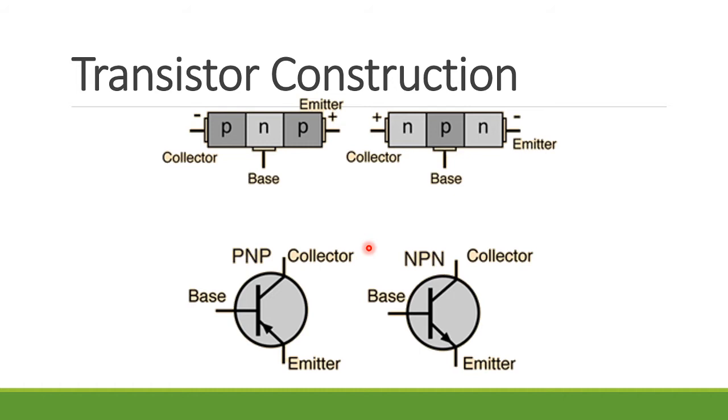Here is the transistor construction - PNP or NPN. It has three terminals: the collector, the base, and the emitter. The base is always in the middle. Whatever is the sandwiched material, that is our base. The symbol for transistor is like this, the schematic symbol. They're different - PNP and NPN - depending on the material. This is PNP, this is NPN.